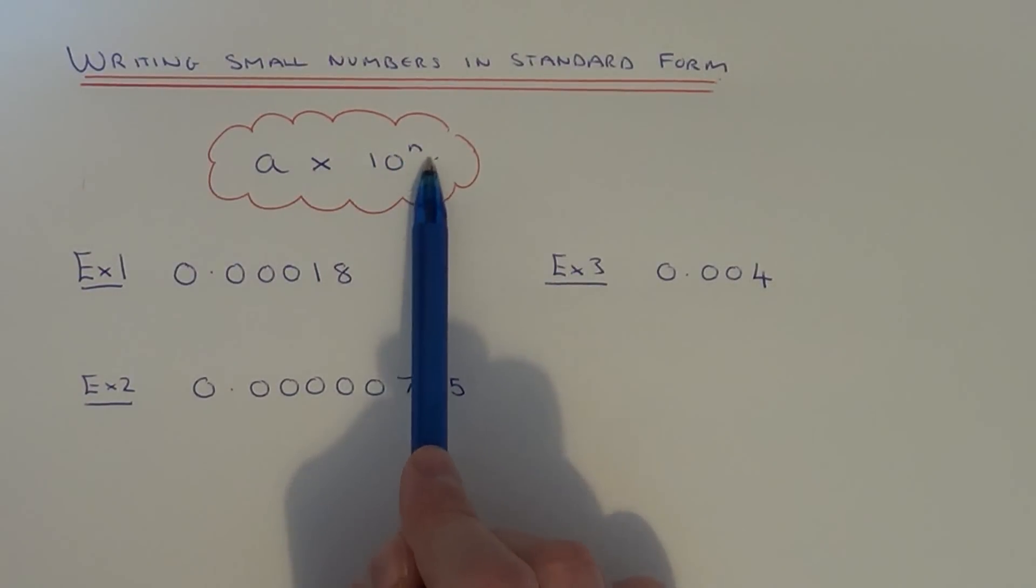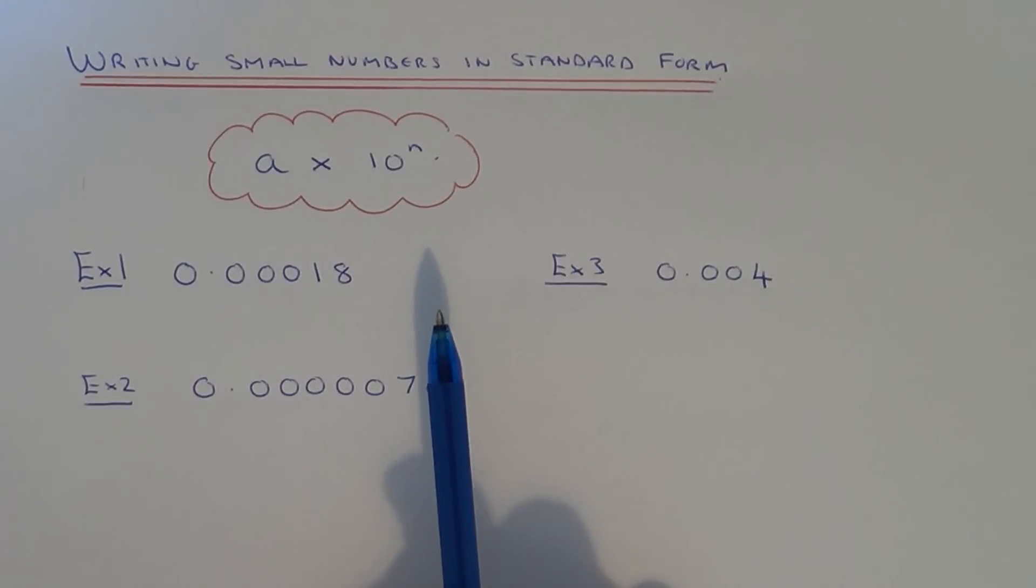When you have small numbers though, the power is actually a negative number, because this actually means you're dividing this number by 10 to give you the number which you have in the question.